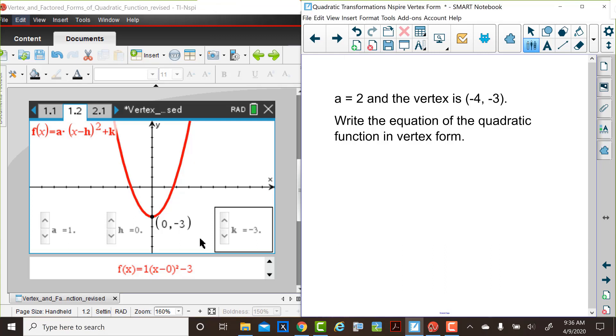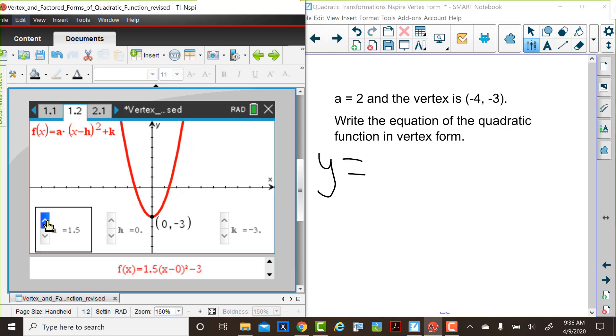If a is equal to 2, we know that we have a greater multiplier than with the parent function. So Judy's going to change the a value to 2 on the graph. And, of course, we would find that we would see an increase in the function values rising more rapidly. And so on the right-hand side, if you were writing this equation, you would start with y is equal to 2.